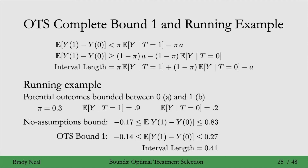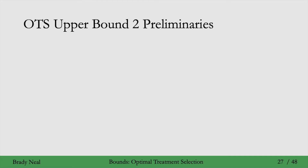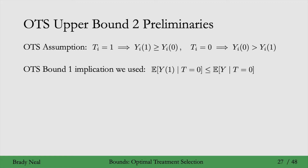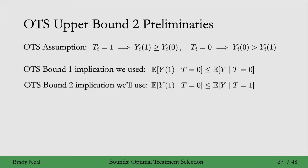Even though we've cut the interval length to 0.41, we still haven't identified the sign of the causal effect — the interval still contains 0. We'll now move to a bound that identifies the sign. This is OTS bound 2, also stemming from the OTS assumption. For OTS bound 2, we use a different implication: the expected value of y1 given t equals 0 is less than or equal to the expected value of y given t equals 1.